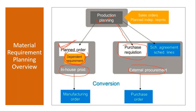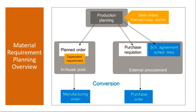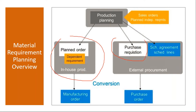Once the purchase requisition is generated, it is converted to a purchase order — this is the MM part, taken care of by the purchasing department. In some exceptional scenarios, if proper settings are made, MRP can directly generate schedule lines — schedule agreement with schedule lines. But the MM team will take care of that. Our role is only to ensure that the system generates purchase requisitions.